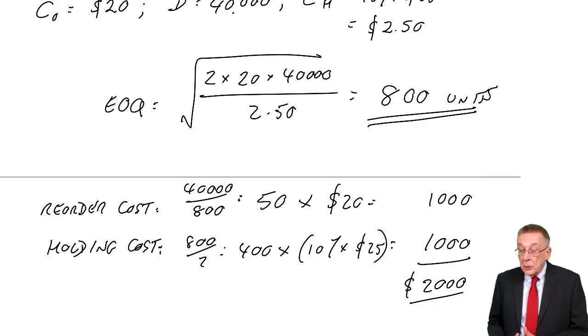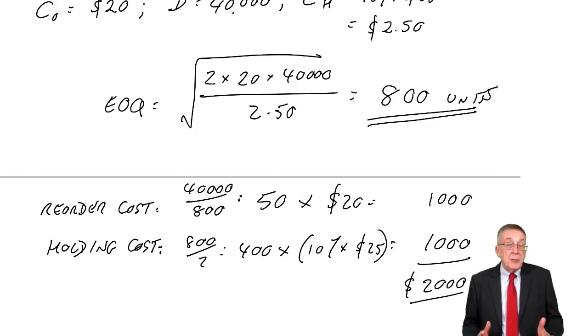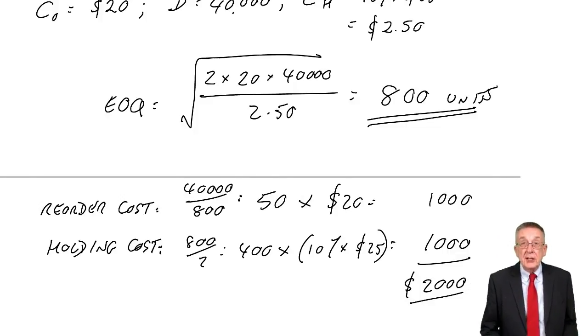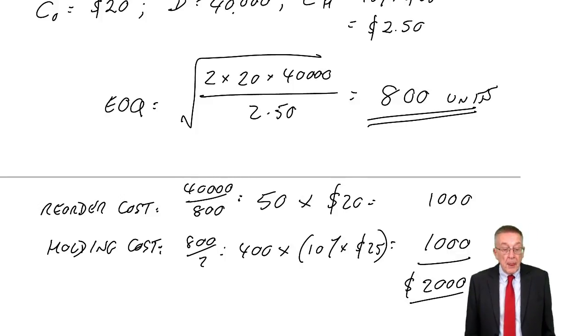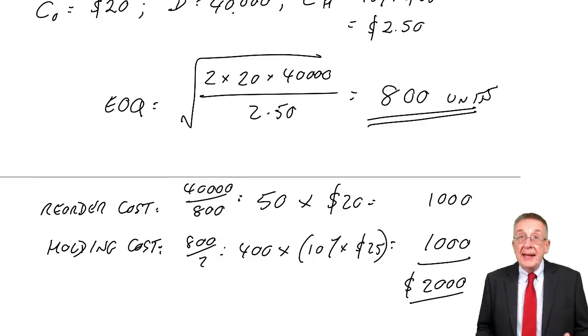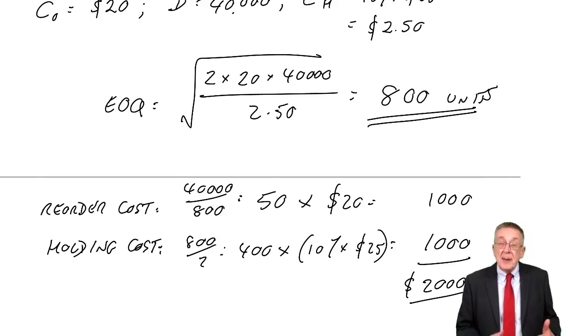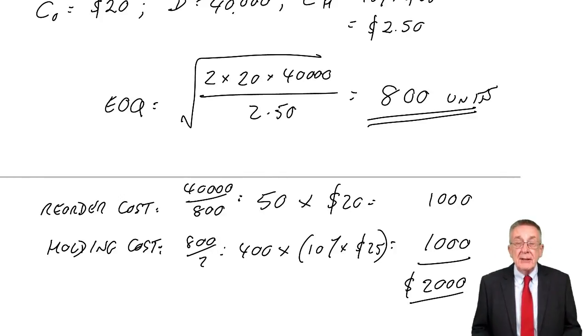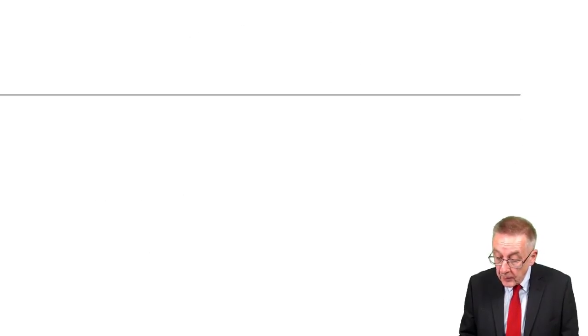Now we already know that 800 units will give the minimum inventory costs. If we order bigger quantities each time, the inventory costs over the year are bound to be higher. Think back to the graph. But it could be worth paying higher inventory costs if because of the discount, the cost of buying the 40,000 units over the year was lower.